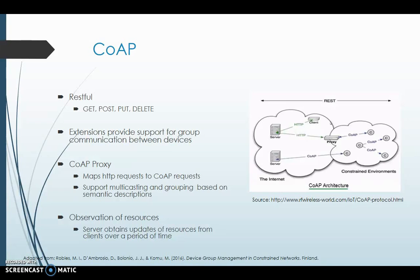REST enables the transfer of resources such as files, variables, and devices, and these resources can be manipulated by clients. The CoAP protocol — which stands for Constrained Application Protocol — is very efficient in the management of devices in constrained networks. This protocol has the possibility to be extended for group communications. The first extension is the CoAP proxy, which maps HTTP requests to responses, and also supports multicasting and grouping.